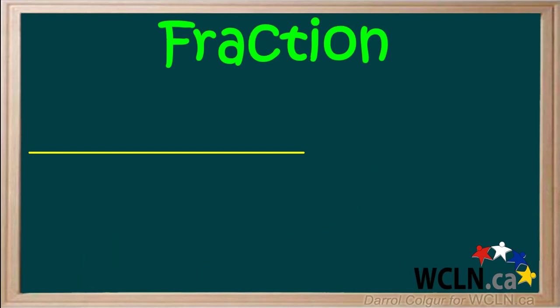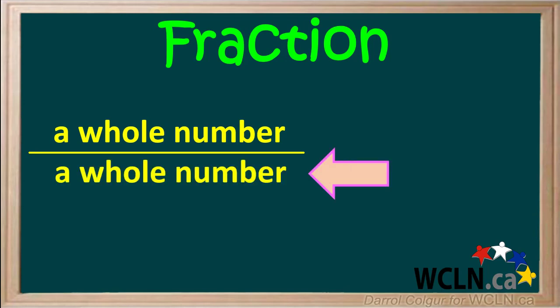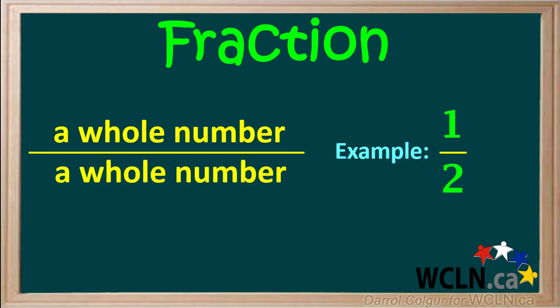In a fraction, we always have a line like this. Above the line, there's a whole number, and below the line, another whole number. An example would be the number one on top and the number two on the bottom. Another example could be a three on top and an eight on the bottom.